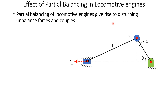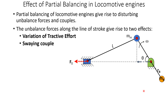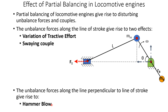Partial balancing of a locomotive gives rise to disturbing unbalanced forces and couples. We provide a balancing mass m_b × r_b to partially balance the reciprocating force m_re × r × ω² by a fraction c. The unbalanced force along the line of stroke gives rise to two effects: variation of tractive effort and swaying couple. The balancing mass also produces a vertical component, giving rise to a third effect: hammer blow.